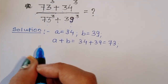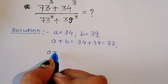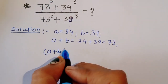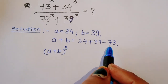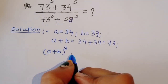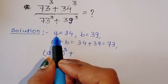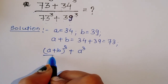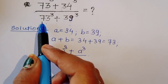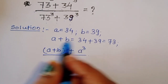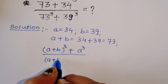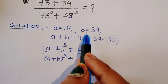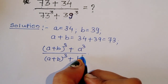Now, since A plus B equals 73, we can rewrite the expression. We substitute: the numerator becomes (A+B)³ plus A³, since 34 is A. The denominator becomes (A+B)³ plus B³, since 39 is B.